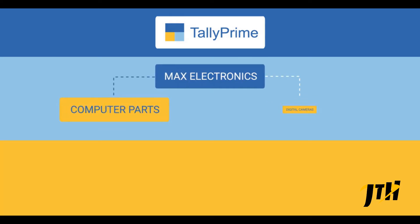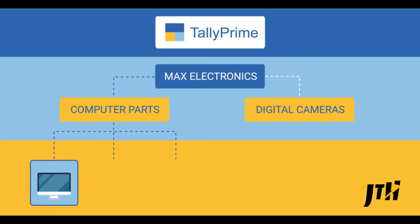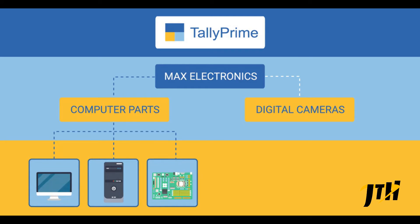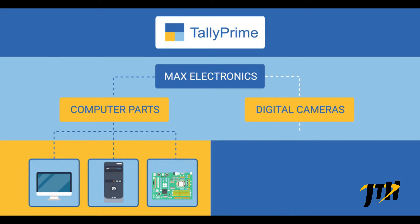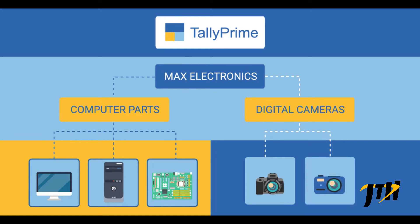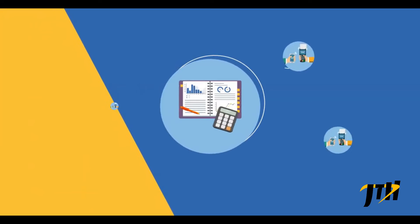In Tally Prime this can be easily achieved by creating stock groups and stock items for Max Electronics. Let us create two major stock groups: computer parts and digital cameras. Within computer parts we can create subgroups for monitors, processors, etc. Within digital cameras we can create subgroups like DSLR, compact digital camera, etc. All their stock items can be grouped under these stock groups.